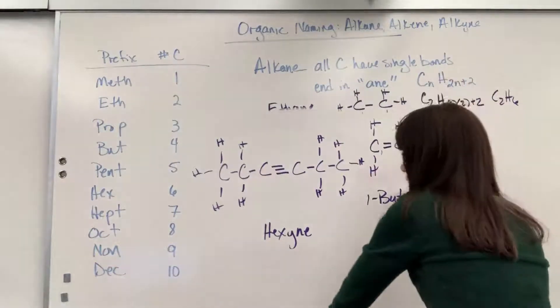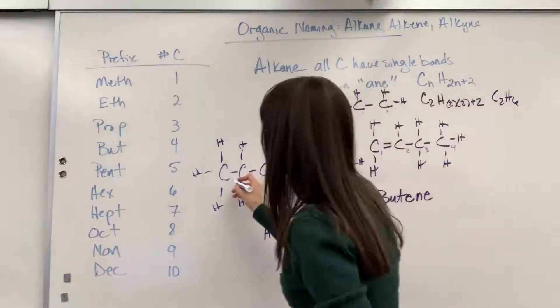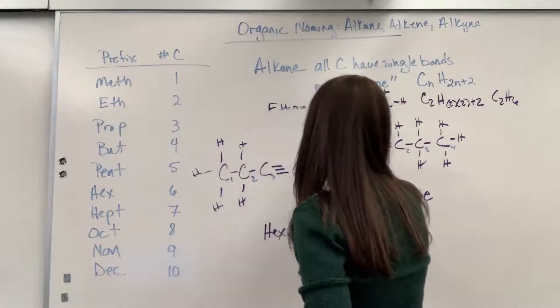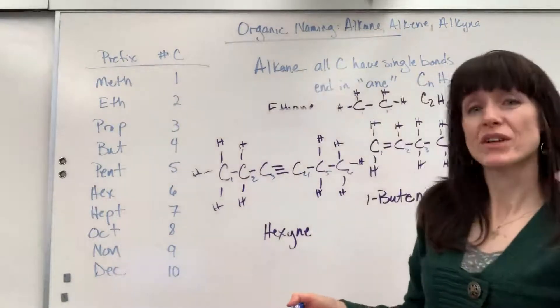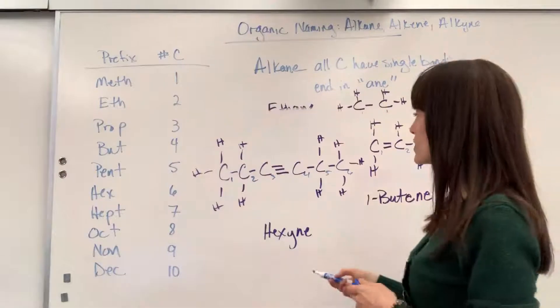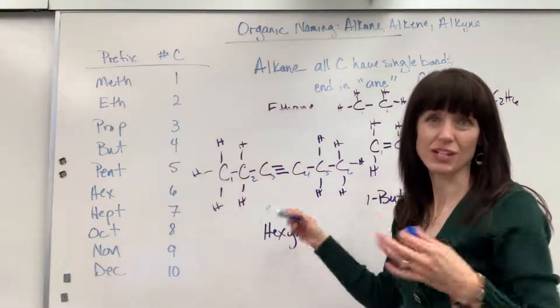Let's go left to right. One, two, three, four, five, six. So the first carbon, lowest number of carbon that touches the triple bond here is the three. Let's try the other direction.